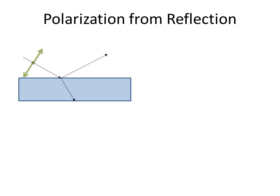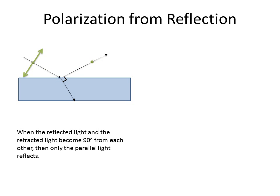So again, we have the same thing, the light's going to come in, and it's going to reflect off. And this time, when the reflected angle and the refracted angle become at 90 degrees, we'll see that only the parallel component of the light comes off.